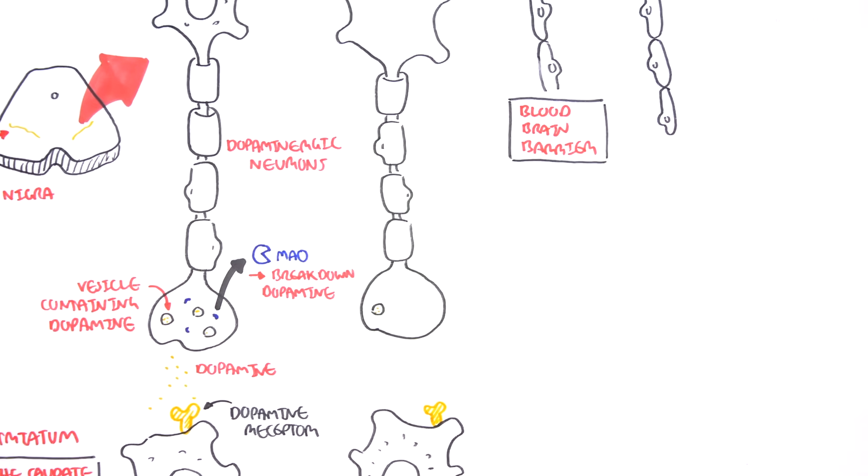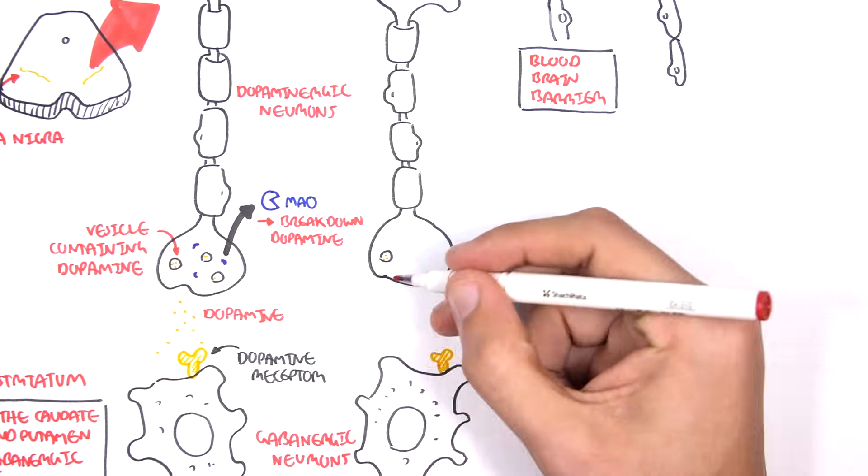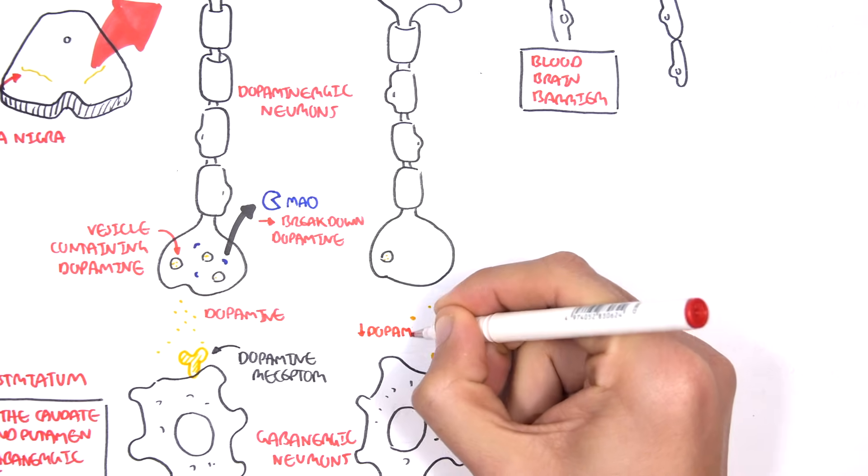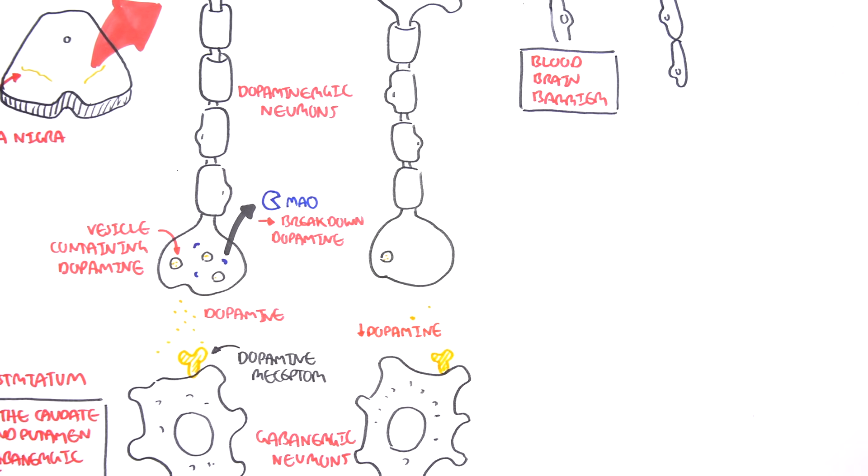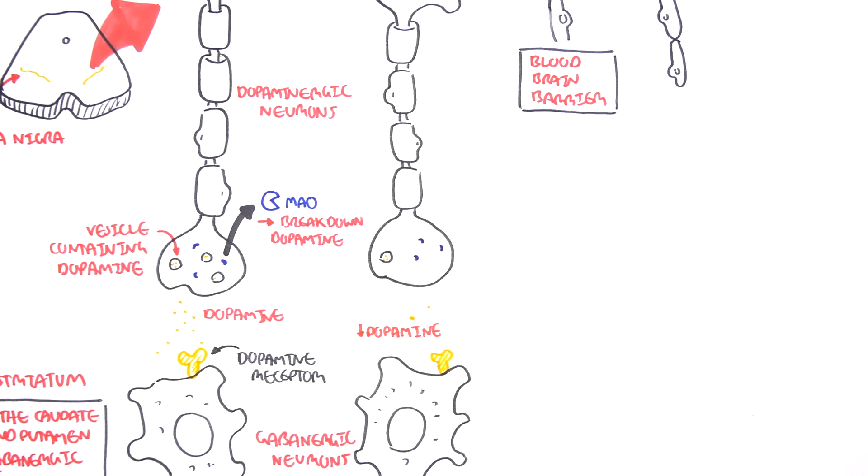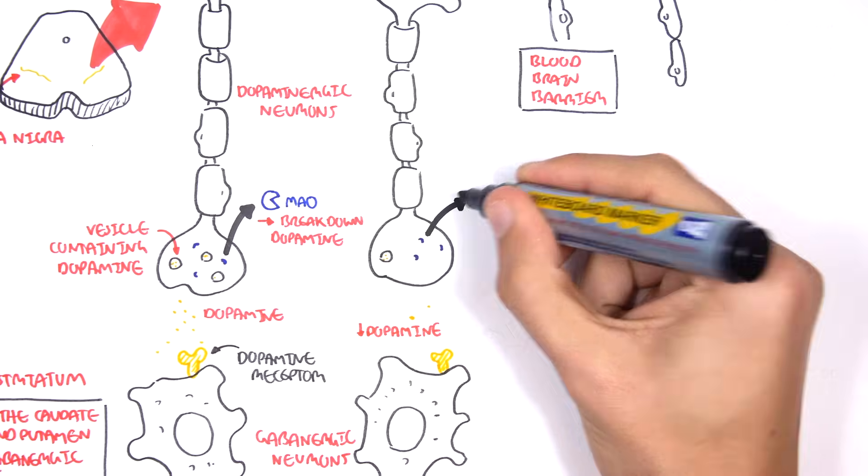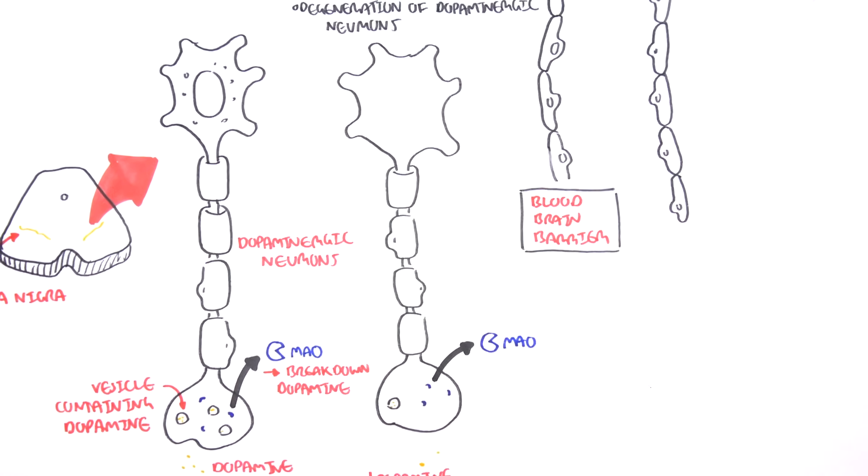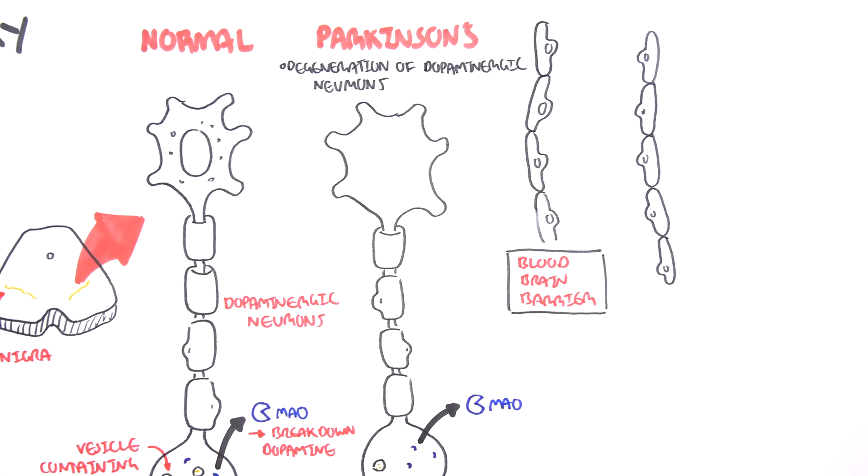In a Parkinson's disease patient, we have decreased dopamine in the synaptic cleft because no dopamine is being produced, because the neurons are dying. Similarly, we have the enzyme monoamine oxidase, which will still break down the dopamine if it were being produced.